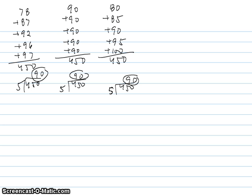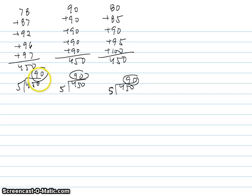From our first two examples, we can see that two different sets of numbers can have the same average. The warm-up numbers 78, 87, 92, 96, and 97 had an average of 90. Five 90s also had an average of 90. And here's another set — 80, 85, 90, 95, and 100 — which also happens to have an average of 90.